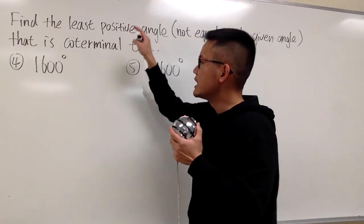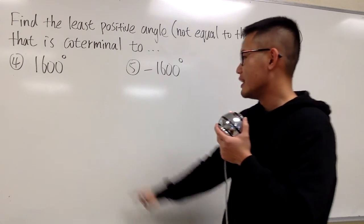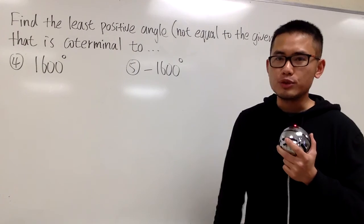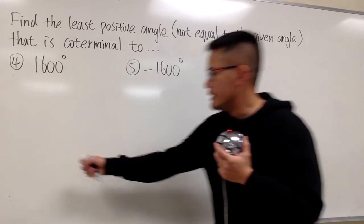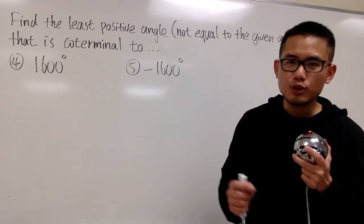I'm going to show you guys how to find these positive coterminal angles to these two given angles. As we can see, these two angles are not in between 0 and 360 degrees. That means the answers at the end will be in between 0 and 360 degrees.